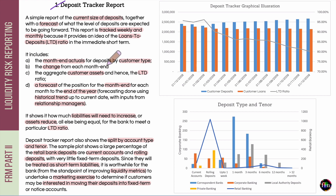The deposit tracker report contains information about the current size of the bank's deposits together with a forecast of how the level of these deposits is expected to change going forward in time. As far as a recommended frequency is concerned, this report is to be tracked on a weekly and in some cases a monthly basis. This report provides the ALCO an idea of the loans to deposits ratio, henceforth referred to as the LTD ratio.